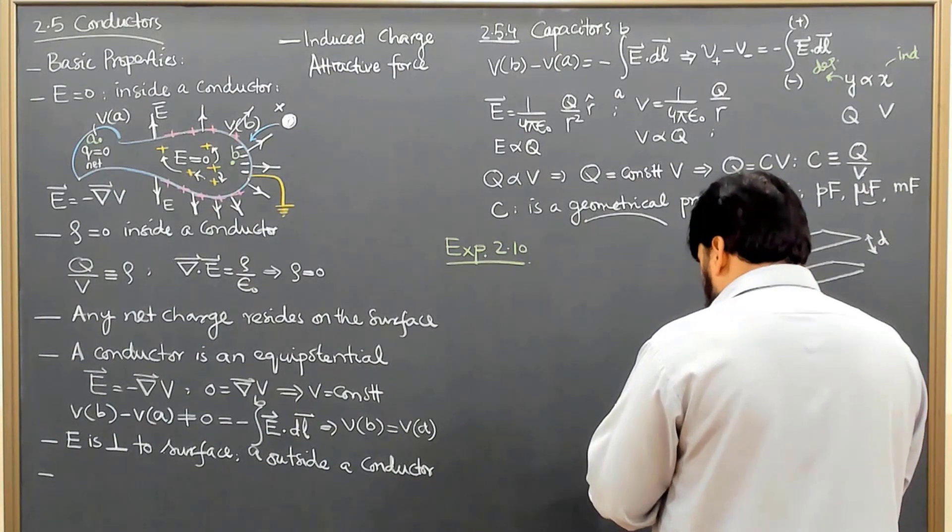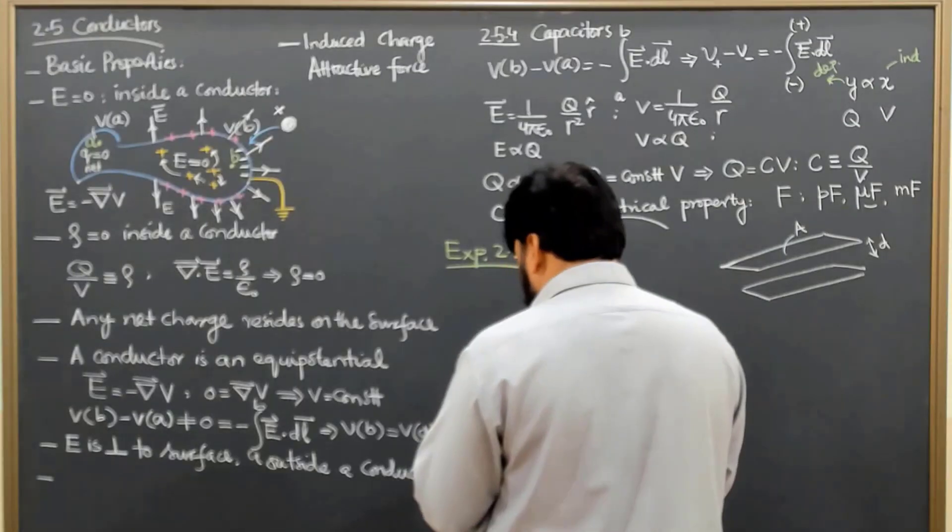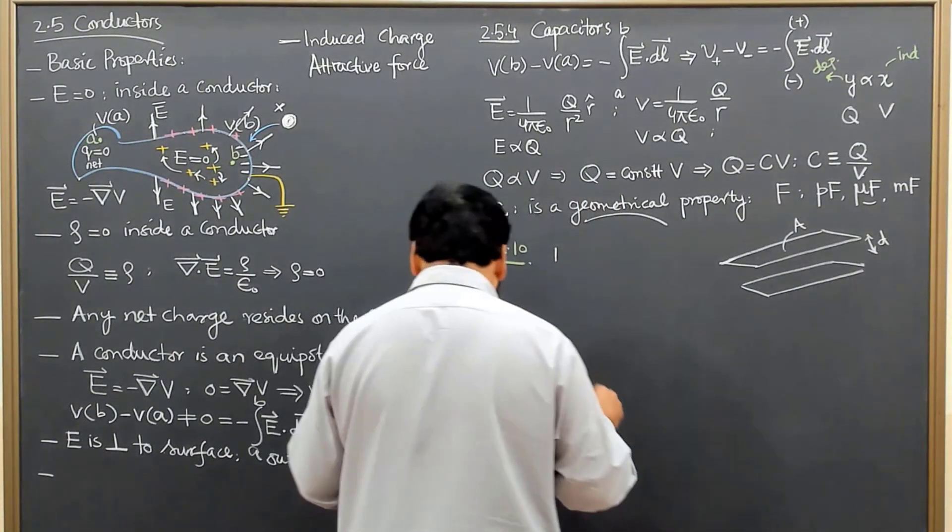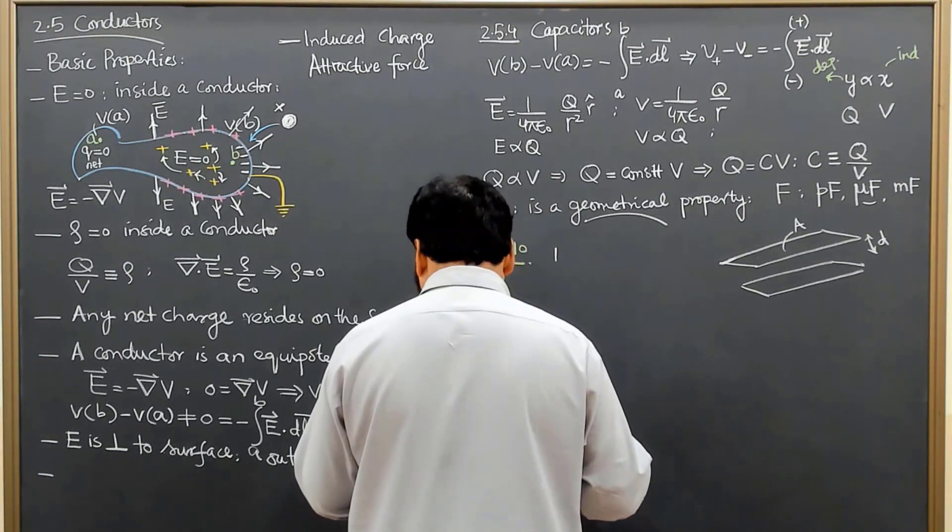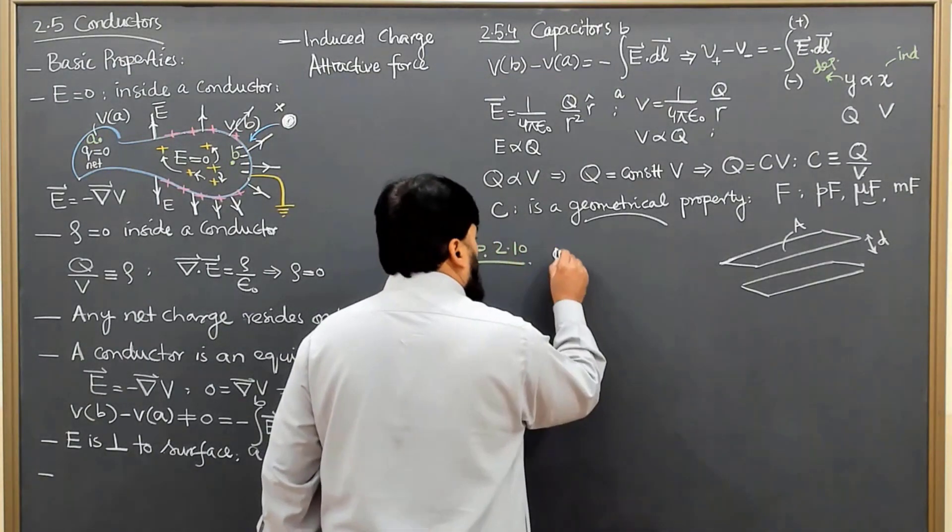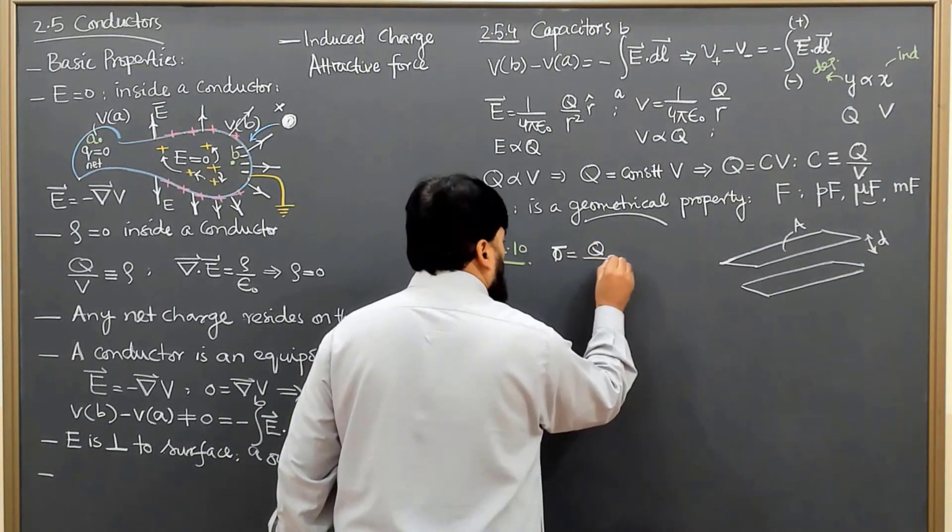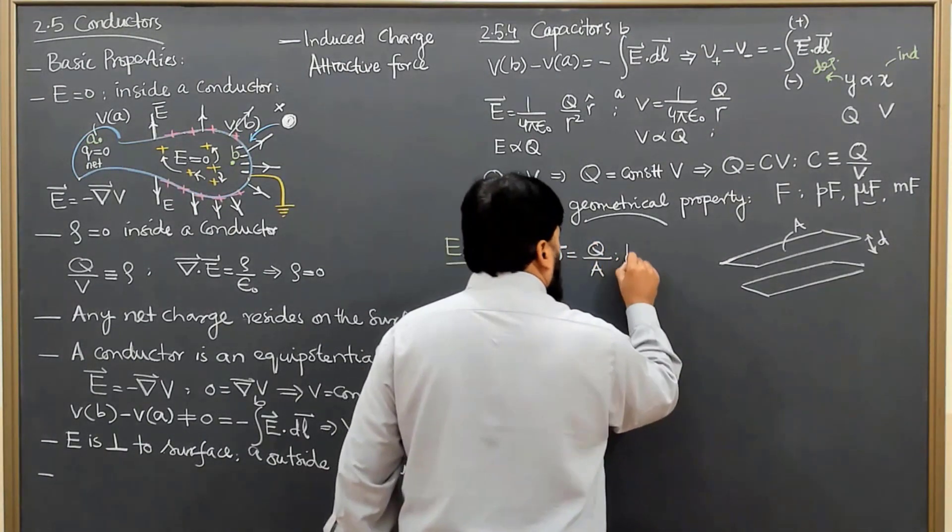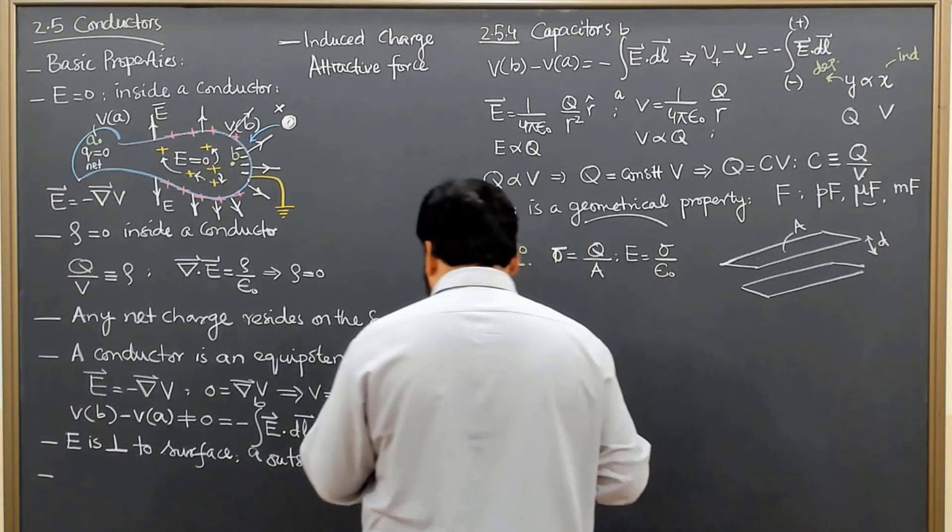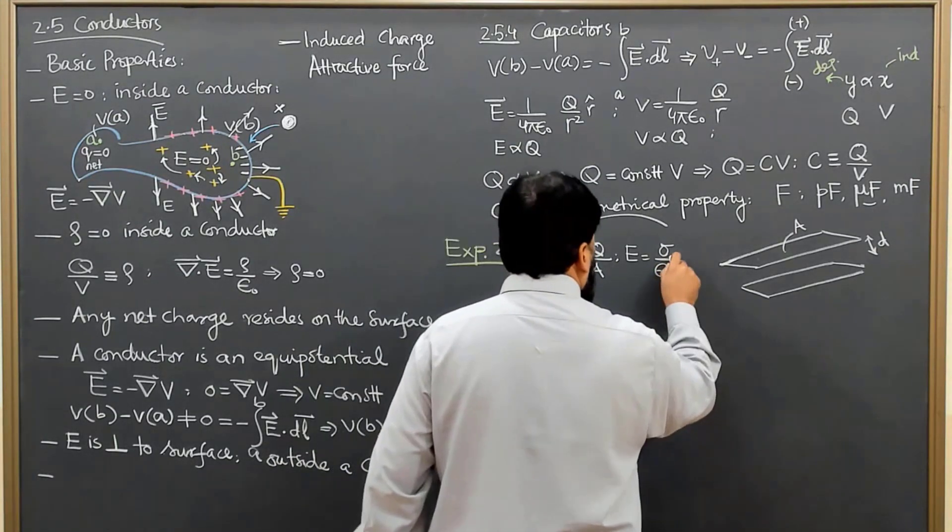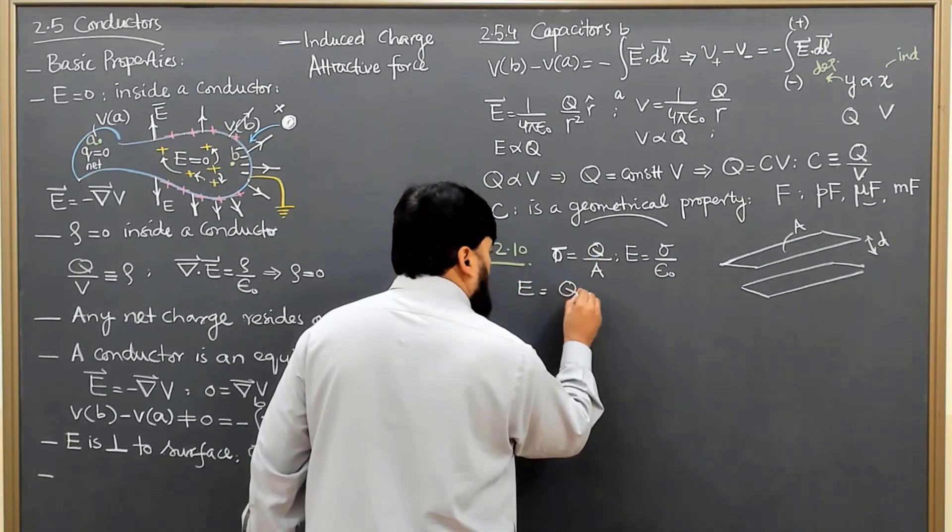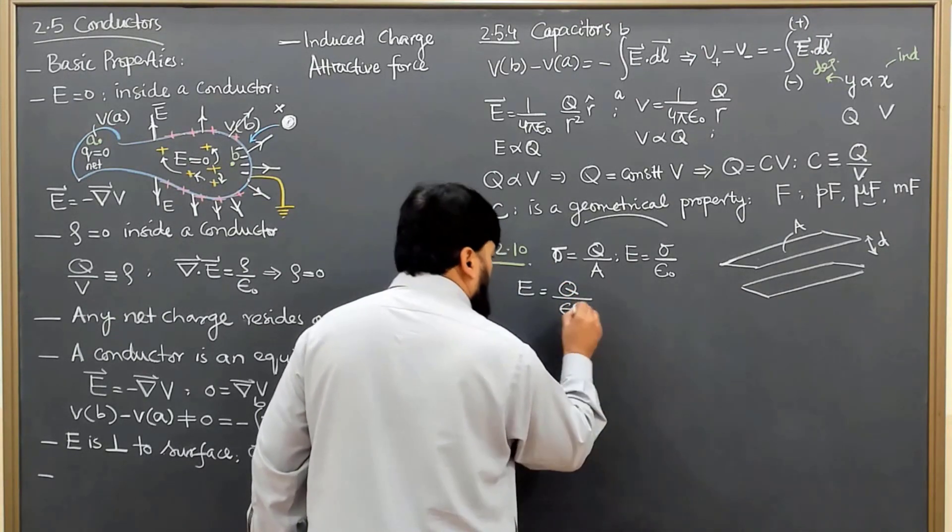We will move to the exercise. We have already solved that the electric field of such a system is sigma over epsilon naught, where sigma is charge per unit area. The electric field equals sigma over epsilon naught, which means E equals Q over epsilon naught A.